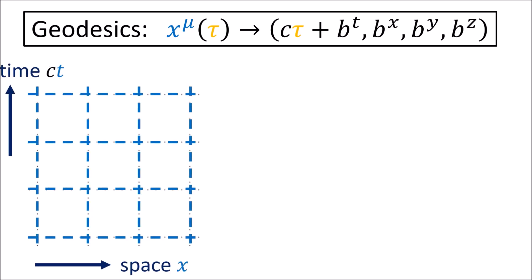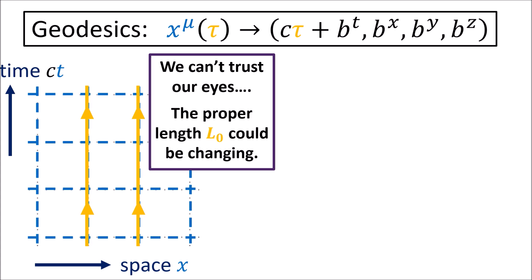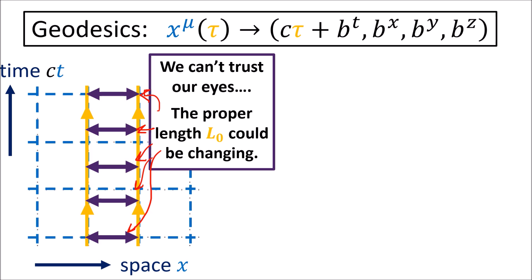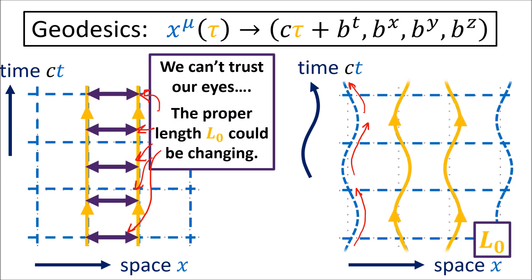At first glance, it might seem like these geodesics imply no waves in spacetime are happening, because the geodesics have constant space coordinates. But remember, in relativity we can never trust our eyes to measure distances on spacetime diagrams. It could very well be the case that the proper distance between these two geodesics is changing. It turns out this is exactly what's happening. In the transverse traceless gauge, the spatial coordinate lines are sort of waving along with spacetime as the gravitational wave passes by, and the distance between neighboring geodesics is actually changing. We can check this by calculating the proper distance L0 between two neighboring geodesics.